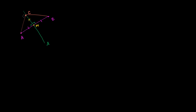If you look at triangle AMC, this side is congruent to the corresponding side on triangle BMC. Then you have an angle in between that corresponds to this angle over here. Angle AMC corresponds to angle BMC, and they're both 90 degrees, so they are congruent. And then you have side MC that's on both triangles, and those are congruent. So we can just use SAS — side angle side congruency. Triangle AMC is congruent to triangle BMC by side angle side congruency.